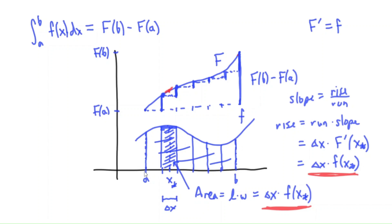That's ultimately the reasoning behind why the Fundamental Theorem of Calculus is true. The total area equals the total length; the area is the sum of the areas of the individual regions, and the length is the sum of the individual heights. On any one interval, the height equals the area because both are delta x times f of x star. That's why the Fundamental Theorem of Calculus is true.